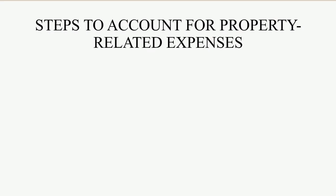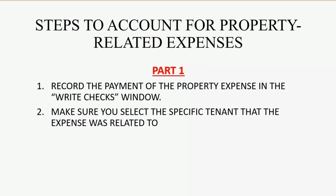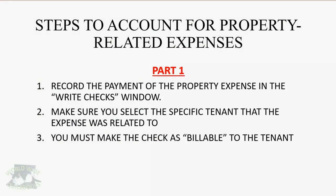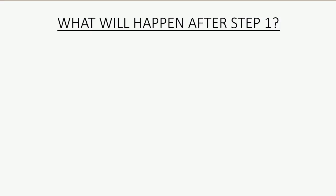Here are the steps to account for property related expenses. There are two parts. The first part is simple: record the payment of the property expense in the Write Checks window. Make sure you select the specific tenant the expense was related to. You must make the check billable to the tenant, and you must type the reason for the check in the memo text field — that is a very important step you'll see in a moment.